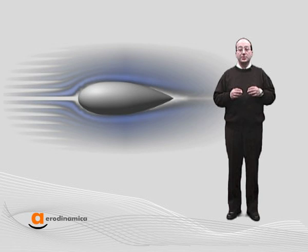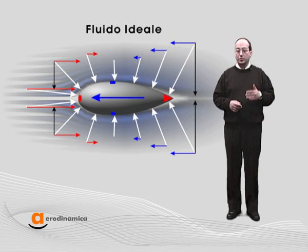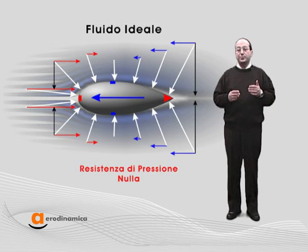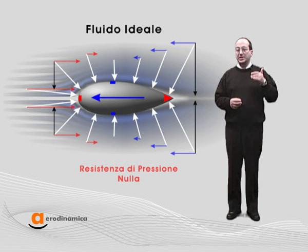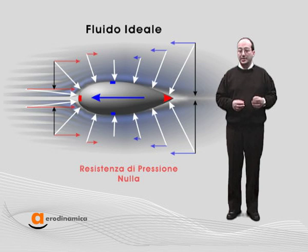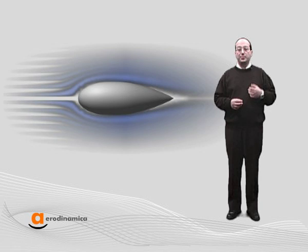It is now easy to deduce that depending on the shape of the object and on the flow condition, the part of the drag due to pressure can be lower or greater than the drag due to friction. It can be mathematically demonstrated that with no viscosity — that is, with an ideal fluid — the sum of the components of drag due to pressure is zero. With an ideal fluid, the drag due to pressure is zero.